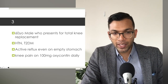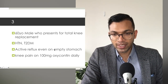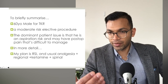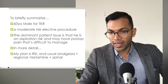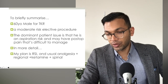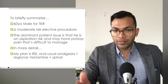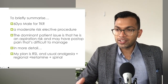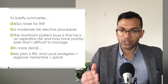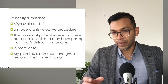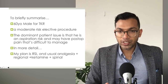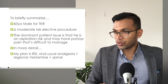A 60-year-old male for total knee replacement with hypertension, diabetes, active reflux even on an empty stomach, and knee pain managed on 100mg oxycontin daily. The main issue here is that post-op pain may be difficult to manage. My plan could be an RSI given the reflux risk, plus usual analgesia, regional or spinal anaesthesia, and ketamine if appropriate. Summary: 60-year-old male, total knee replacement, moderate-risk elective procedure. Dominant patient issues are aspiration risk and potentially difficult post-op pain management.